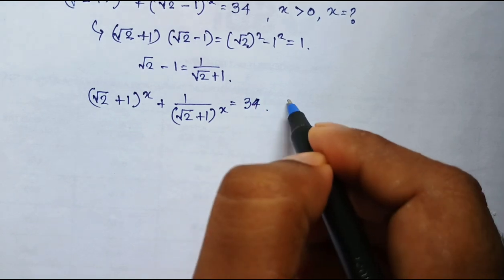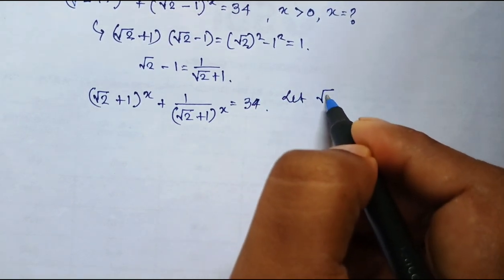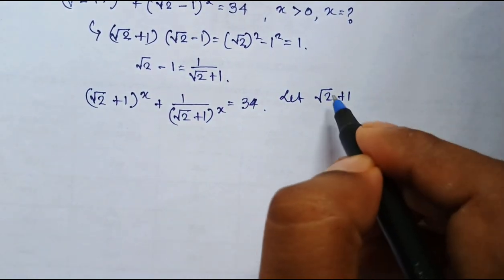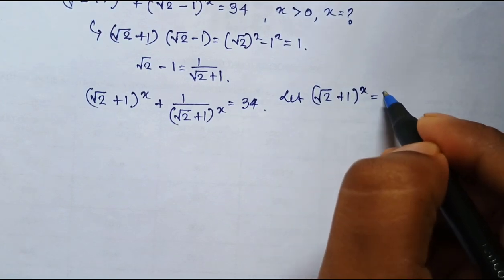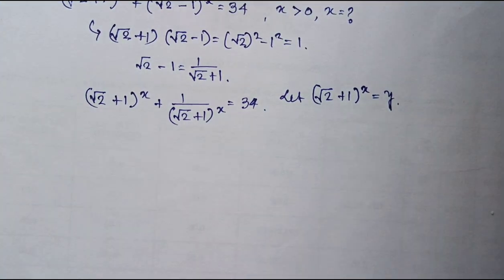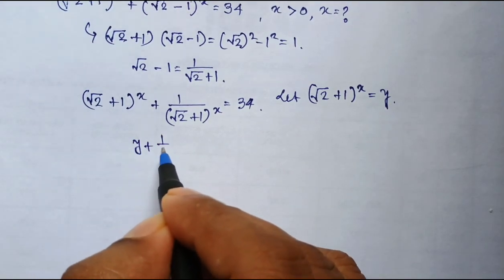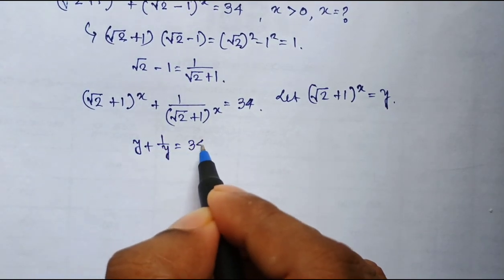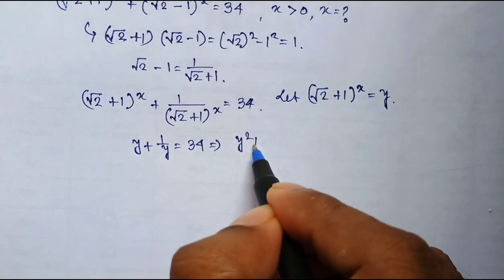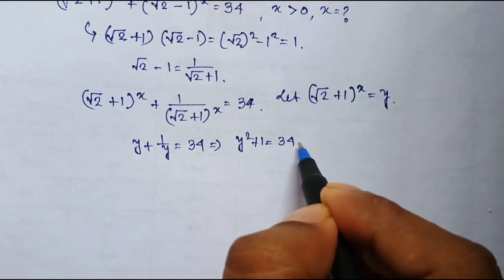Now, let square root of 2 plus 1 whole to the power x equal to y. I am tracking it as a variable y. Then my problem is y plus 1 by y is 34, which implies that y square plus 1 equal to 34y.